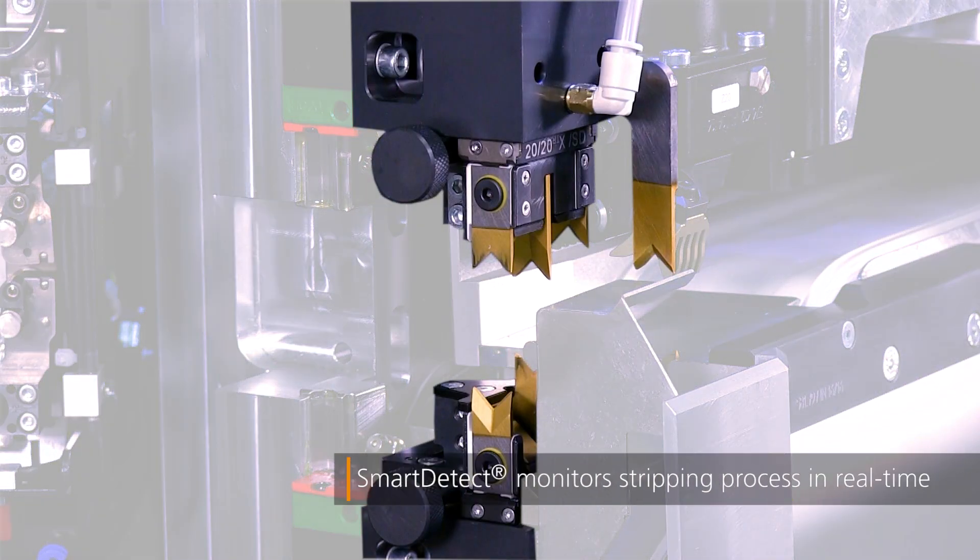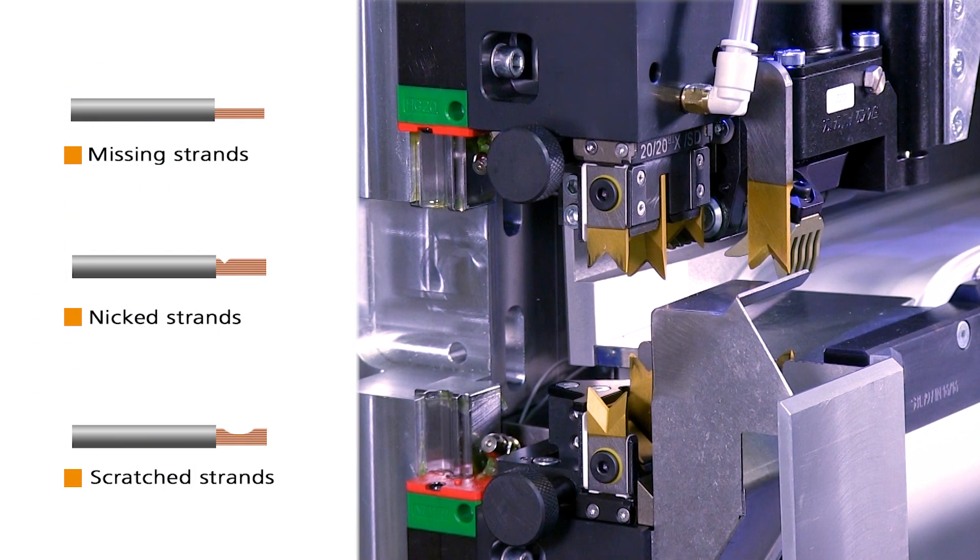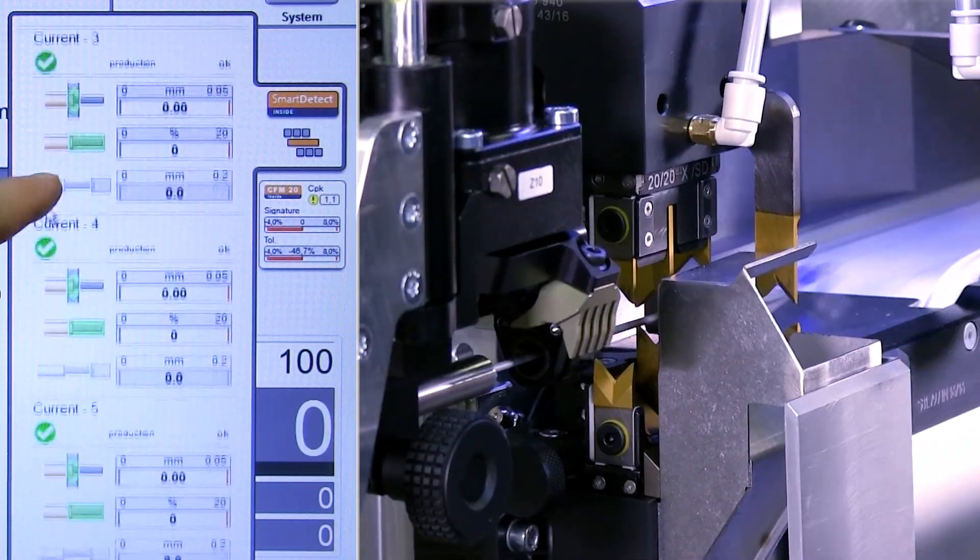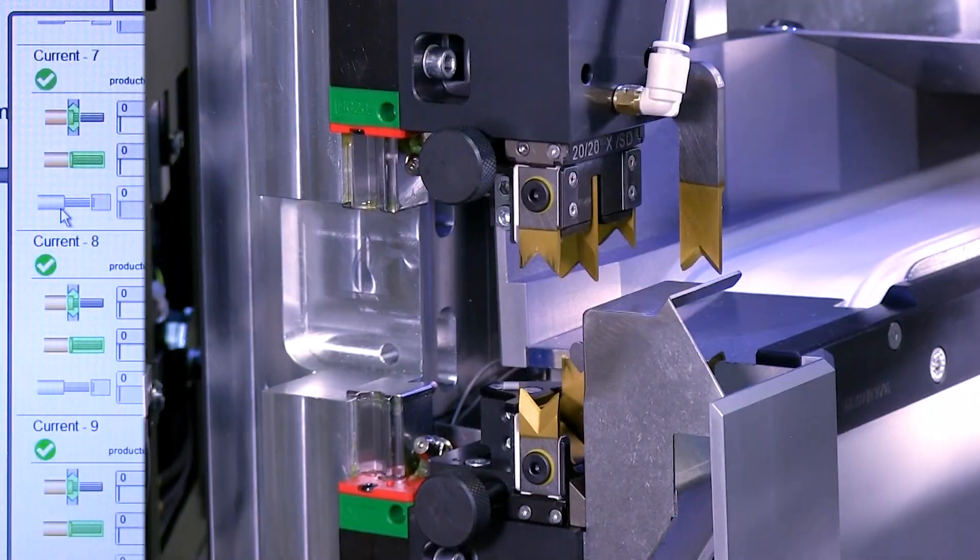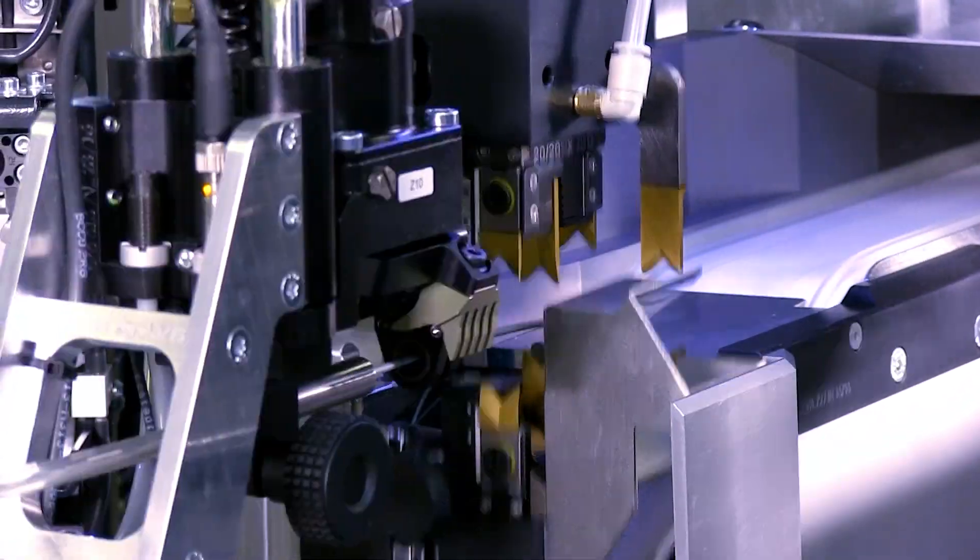SmartDetect is a highly innovative quality monitoring system for Schleuniger crimp centers. This optional sensor-controlled system monitors the complete stripping process in real-time and detects any contact between the stripping blade and the conductor. This provides for improved production quality without sacrificing performance.